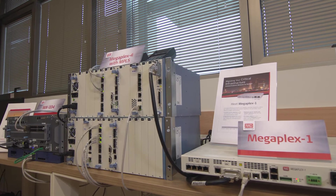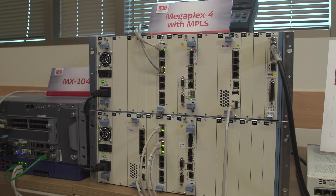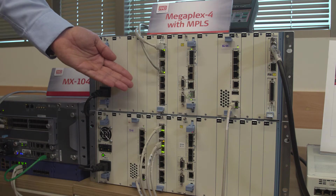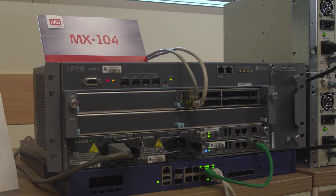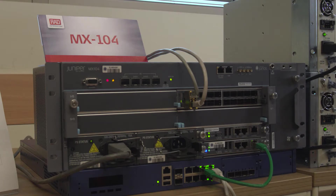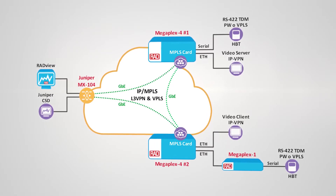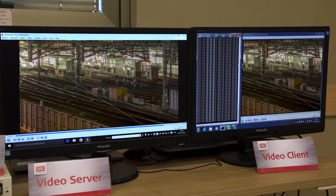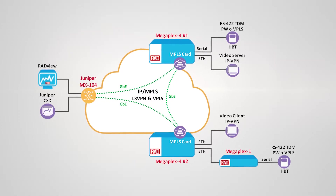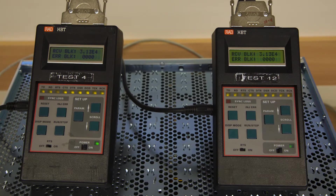We have here a representation of the OT-WAN. The network is built of a Megaplex-WAN, two units of Megaplex-4 with MPLS cards that run the Juniper router function, and a physical MX-104 MPLS PE router. We're running two services over the MPLS network: video traffic over a layer 3 VPN from the video server to the video client, and a serial service over VPLS between two high-speed bit error rate testers.